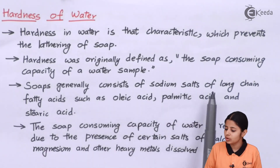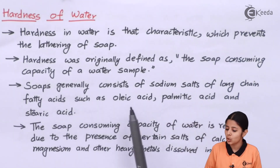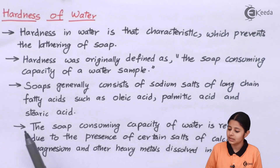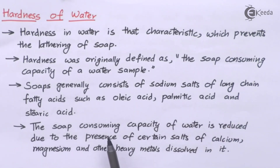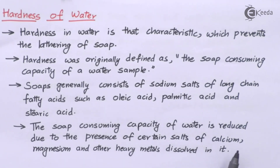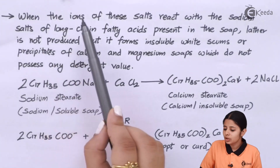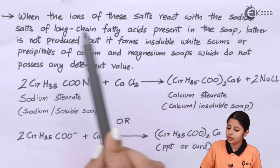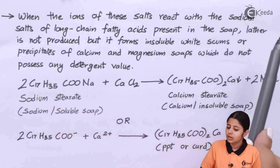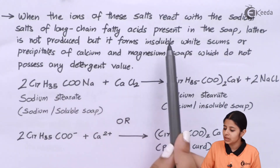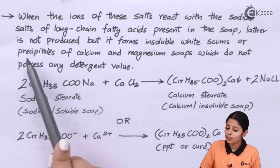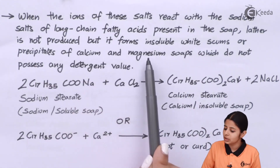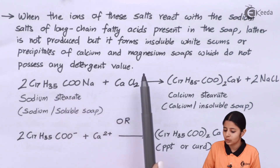Soaps generally consist of sodium salts of long-chain fatty acids such as oleic acid, palmitic acid, and stearic acid. The soap-consuming capacity of water is due to the presence of certain salts of calcium, magnesium, and other heavy metals dissolved in it. When the ions of these salts react with the sodium salt of the long-chain fatty acid present in soap, lather is not produced but instead insoluble white scum — precipitates of calcium and magnesium soaps — which do not possess any detergent value.